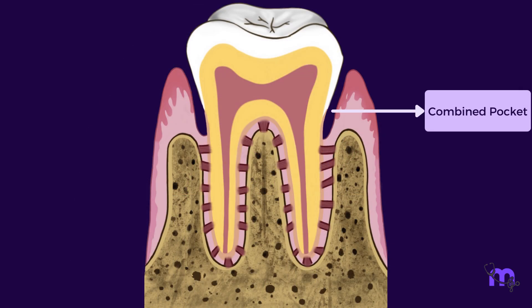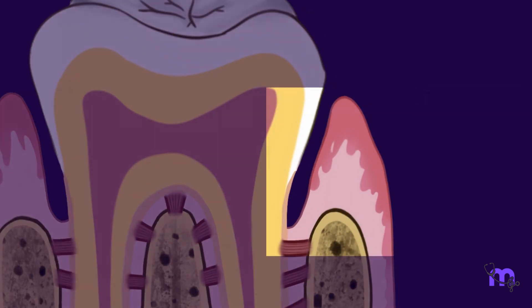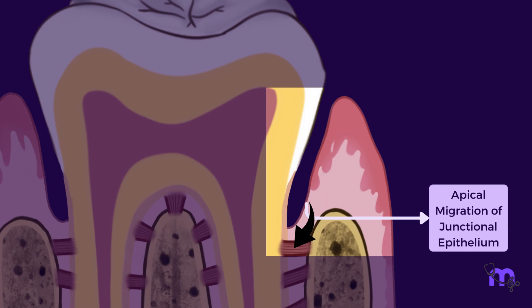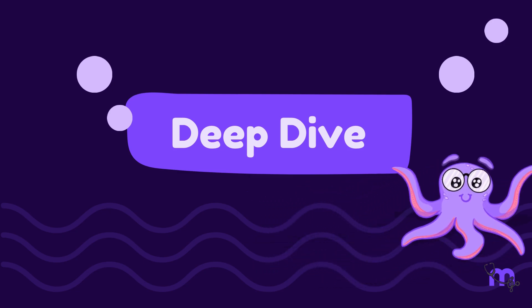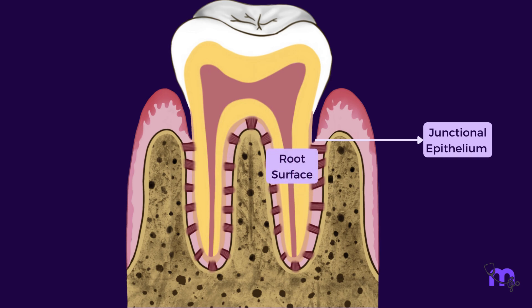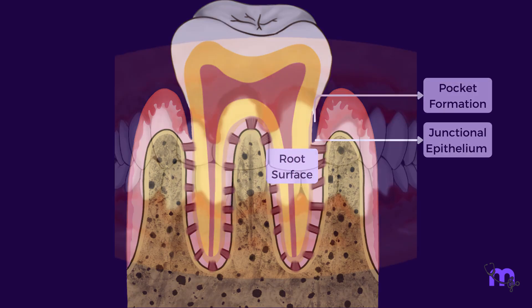The last method of pocket formation is where both the apical migration of junctional epithelium and coronal movement of gingiva is taking place, leading to increased depth. Apical migration of living junctional epithelial cells along the root surface is required for pocket formation. The necrosis of junctional epithelium in necrotizing periodontitis creates an ulcer that prevents epithelial migration, and a pocket cannot form.